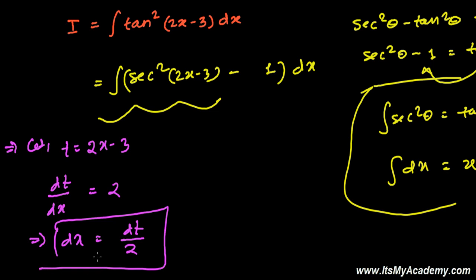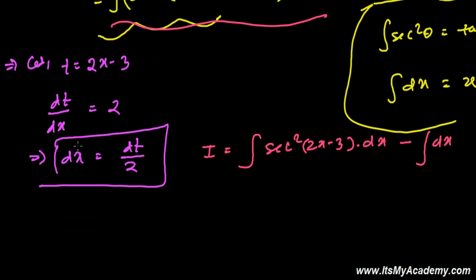And now I'm just going to write it a little properly. I, integral equals to sec square 2x minus 3 times dx minus simply dx. And now I'm just going to put the values of this dx and t.